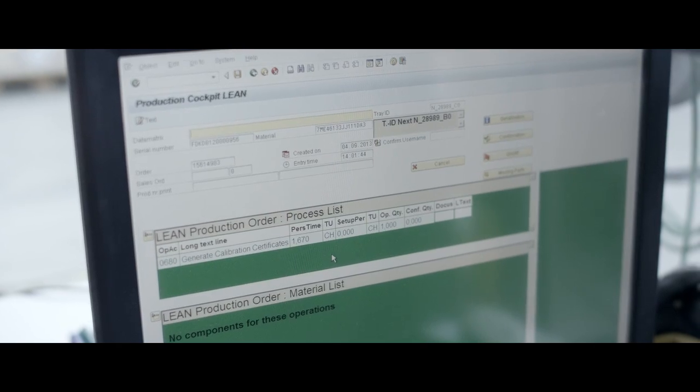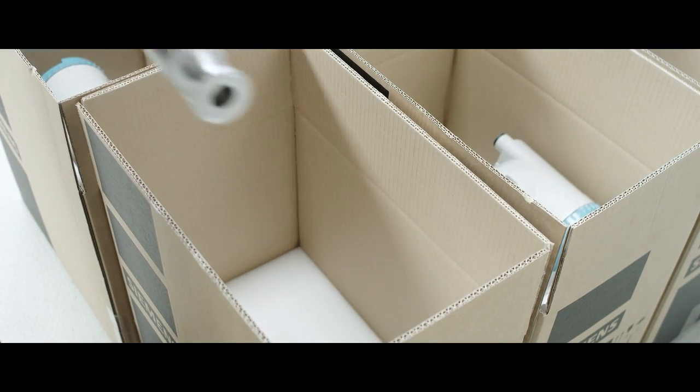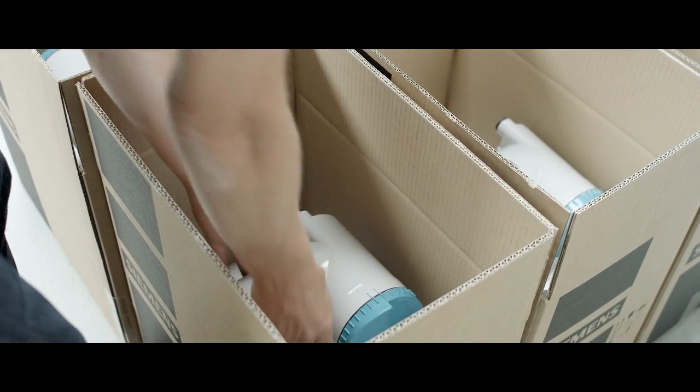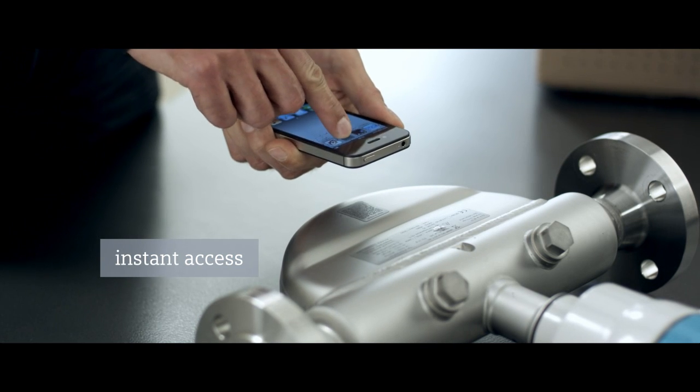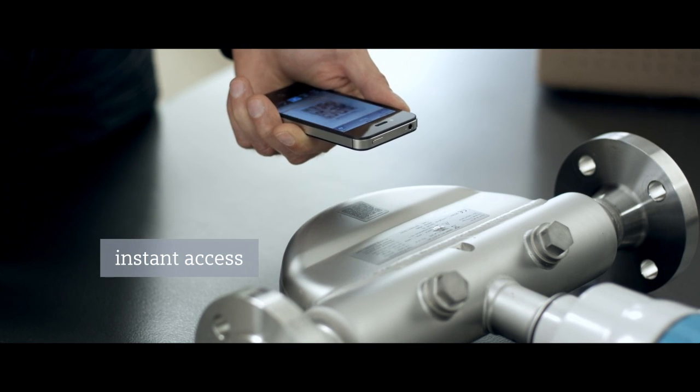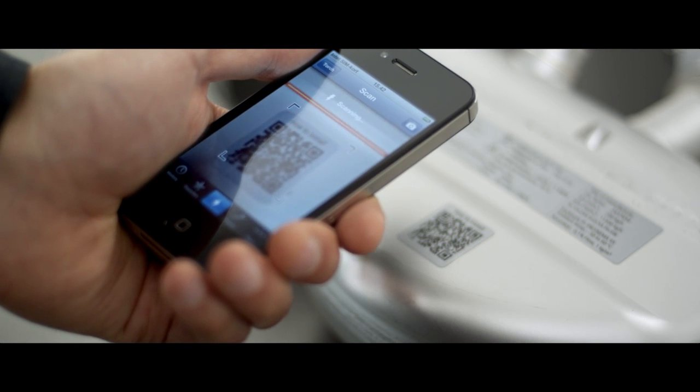The Siemens flow meter can be used as soon as the customer receives it. By means of the QR code on the meter, you can easily access technical data, calibration and installation instructions.